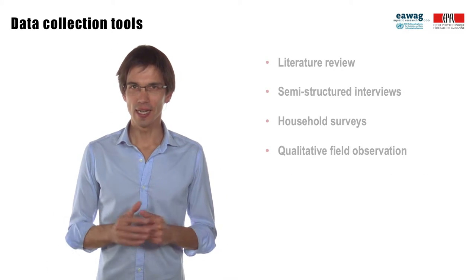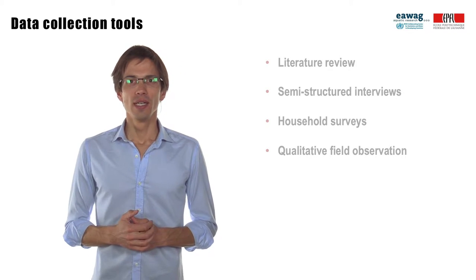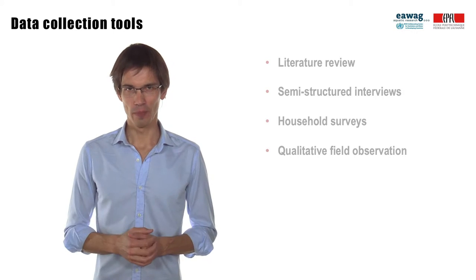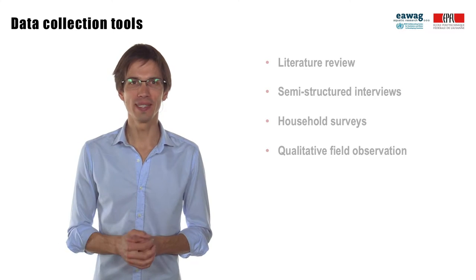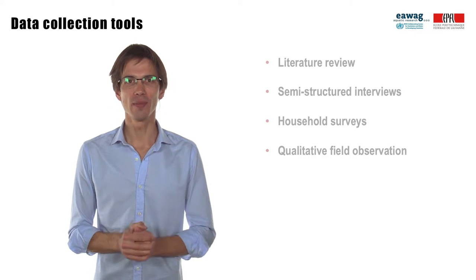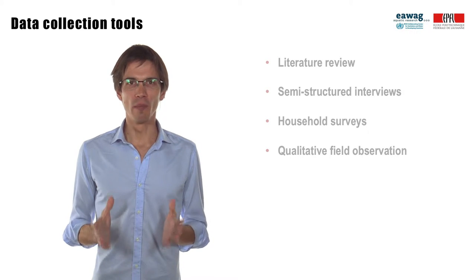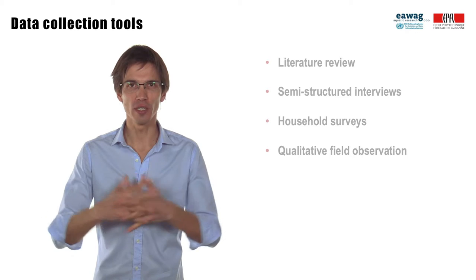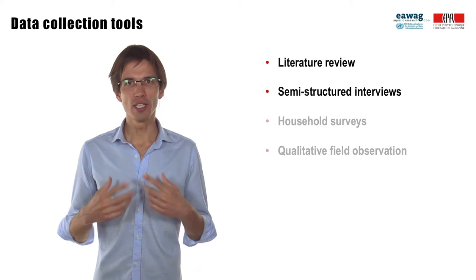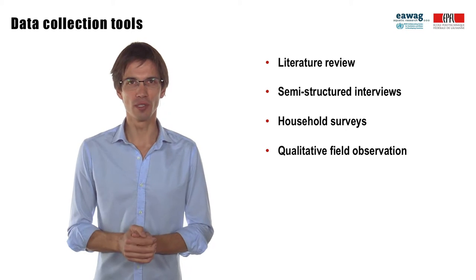We talked a lot about data, but not yet about how to collect it. It is not that easy to collect good quality, useful data, and it is important to get your own primary data as much as possible. The best way to get accurate information is to get it from different sources and then cross-check. Data can be gathered through literature review, semi-structured interviews, household surveys, or qualitative field observations.